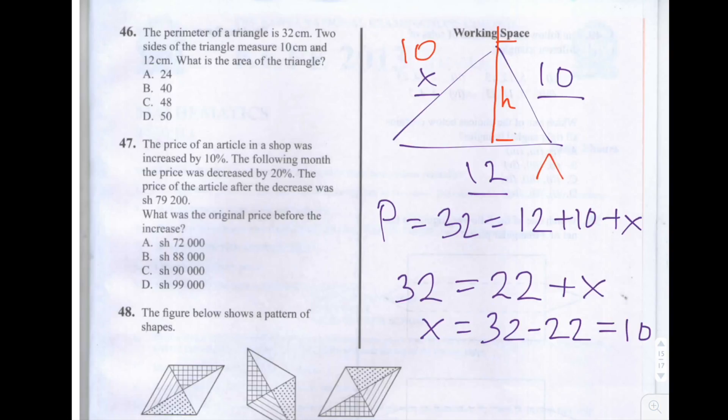And the area of a triangle is equal to a half H, the height, times by B, the base, and the base is 12 centimeters, this length here. So all we need to do is find out H, and we're going to use Pythagoras to do that.